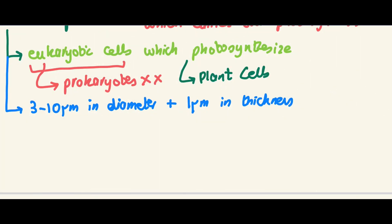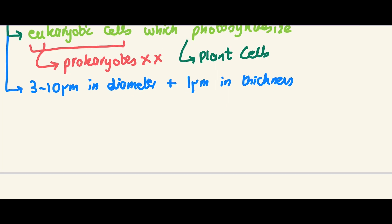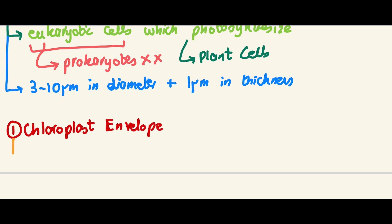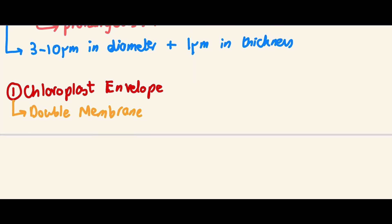Let's move on to the structure. The first component is the chloroplast envelope, which is a double membrane. The purpose of this envelope is to control the entry and exit of substances into and out of the chloroplast.